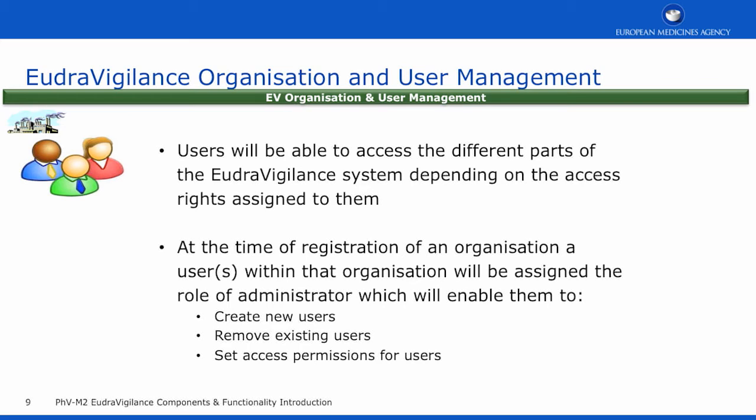Users will be able to access different parts of the EudraVigilance system depending on their access rights. At the time of registration of an organisation, a user or users within that organisation will be assigned the role of an administrator, which will enable them to create new users, remove existing users, and set access permissions for the users within their organisation.